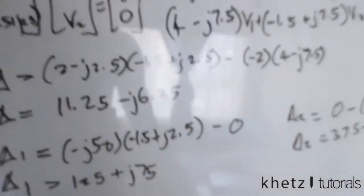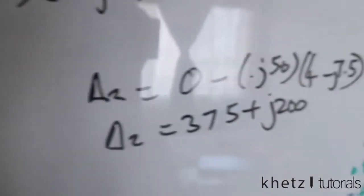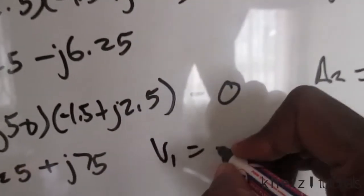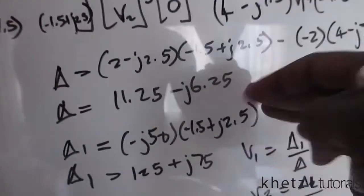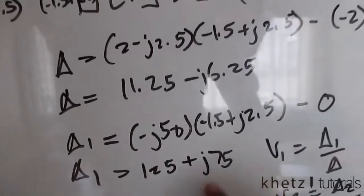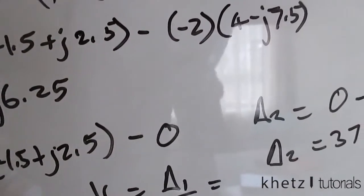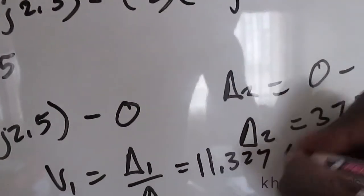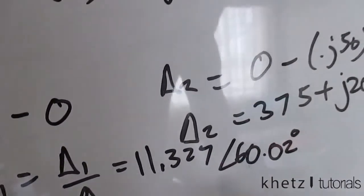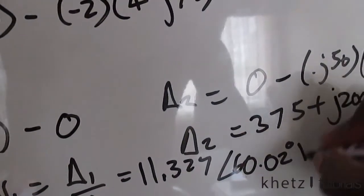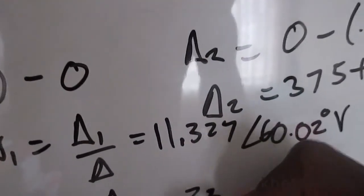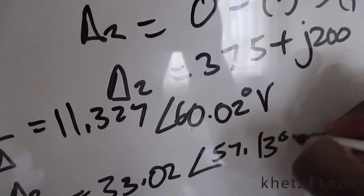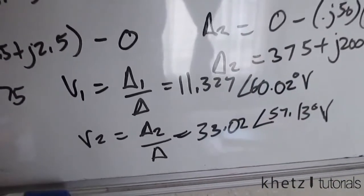Using Cramer's rule: V1 = Δ1/Δ = (125 + j75)/(11.25 − j6.25) = 11.327∠60.02° V, and V2 = Δ2/Δ = (375 + j200)/(11.25 − j6.25) = 3.02∠57.13° V. That is how you solve this particular problem. Thank you.